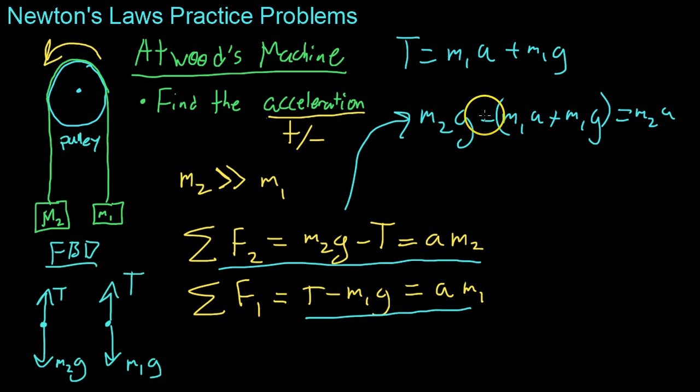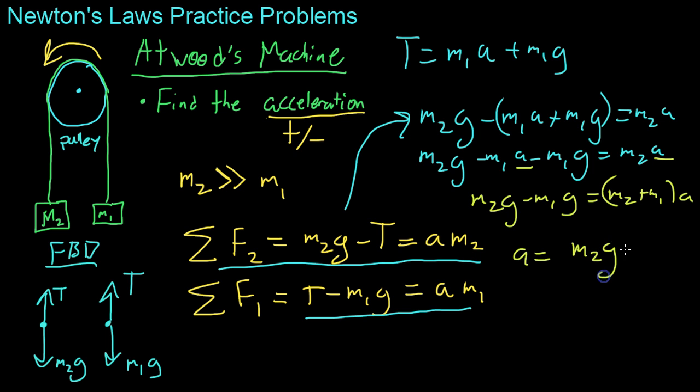Now from here, you just distribute that negative sign in, you get M2g minus M1a minus M1 times g equals M2 times a. And then you just move all the like terms onto the same side. So you take these two A terms, make sure they're both on the right, and you get M2g minus M1g equals M2 plus M1a. You can factor out that A. Or as a final answer, you get A equals M2g minus M1g over M2 plus M1. And that's our acceleration for this Atwood's machine.